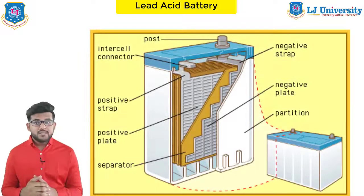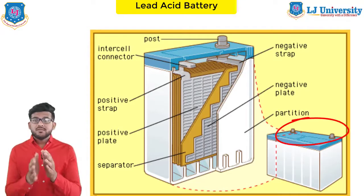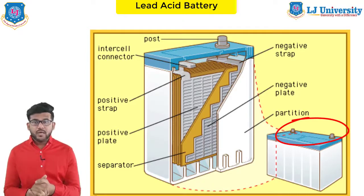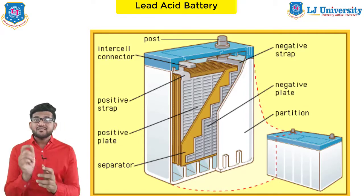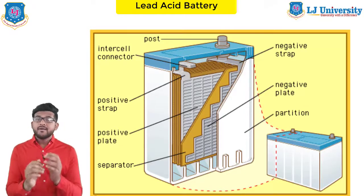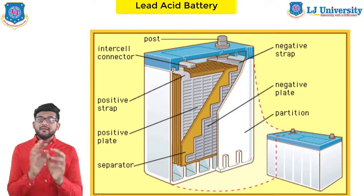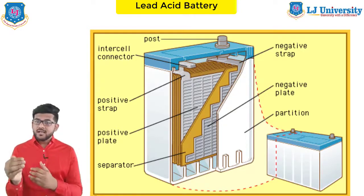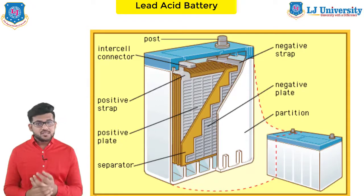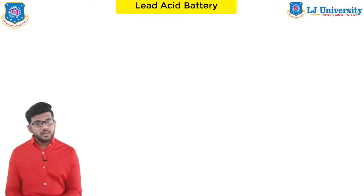Next are battery terminals. The battery has two terminals: positive and negative. The positive terminal has a diameter of 17.5 mm at the top and is slightly larger than the negative terminal, which is 16 mm in diameter. So the positive terminal is larger and the negative terminal is smaller. This was all about the main construction parts of the lead acid battery.